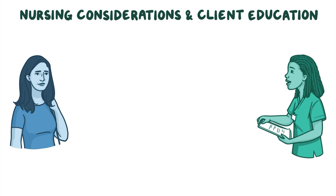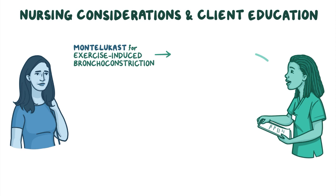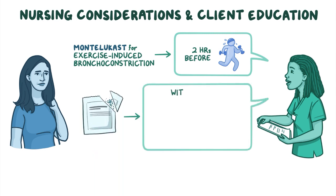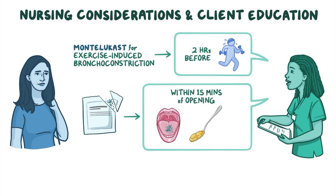If your client is prescribed montelukast to prevent exercise-induced bronchoconstriction, teach them to take the medication two hours before exercising. If the medication is in the form of an oral granule packet, instruct them to take it within 15 minutes of opening the packet. Let them know that they can either put the granules directly in their mouth, or mix it with a spoonful of something like applesauce or ice cream.